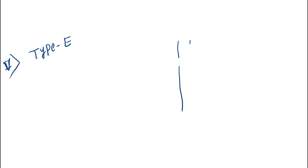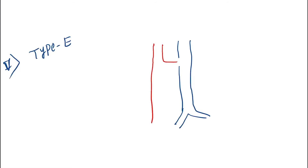Type E — in this condition there will be only one end of the esophagus communicating to the trachea, and there is no presence of two separate ends. It is a continuous esophagus with only one communication to the trachea. This is Type E.